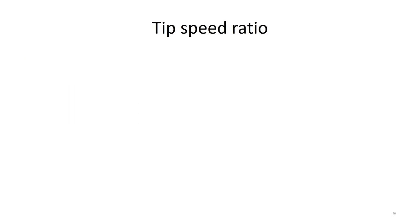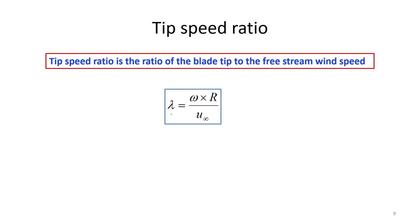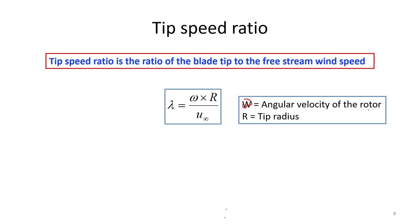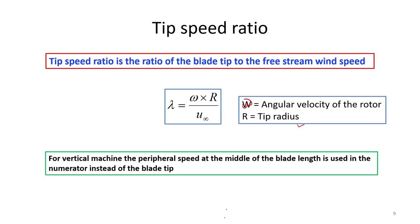Now we need to learn tip speed ratio, which is one of the very important parameters in characterizing a wind turbine. It is defined as the ratio of the blade tip speed to the free stream wind speed. Mathematically it can be represented as lambda equals omega times r divided by u-infinity, where omega is the angular velocity of the rotor, r is the tip radius and u-infinity is the free stream wind velocity. For a vertical axis wind turbine, the peripheral speed at the middle of the blade length is used in the numerator instead of the blade tip.